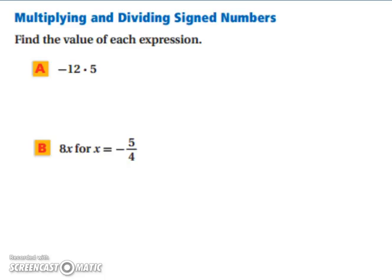Let's practice. Find the value of each expression. So we have a negative times a positive, so you know that your result is going to be a negative number. And then 12 times 5 is 60. So your result is negative 60.